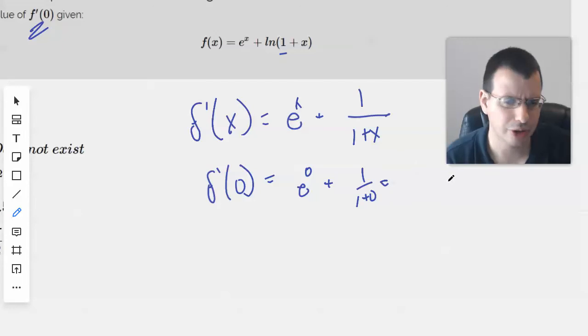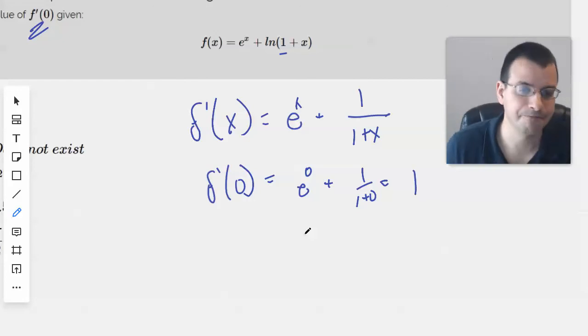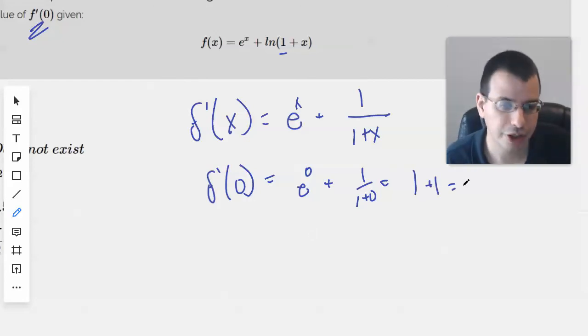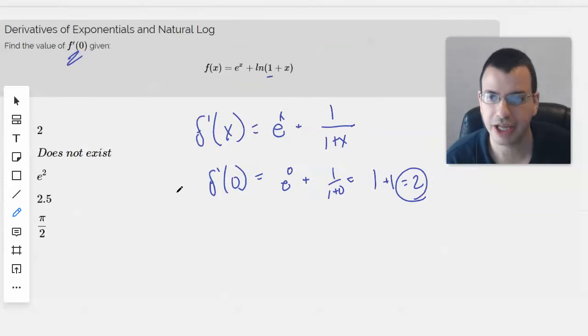This doesn't seem so bad. Deceptively simple. So e^0 is 1. If you don't believe me, you can put it in your calculator. Plus 1 equals 2. So the answer for this is 2.